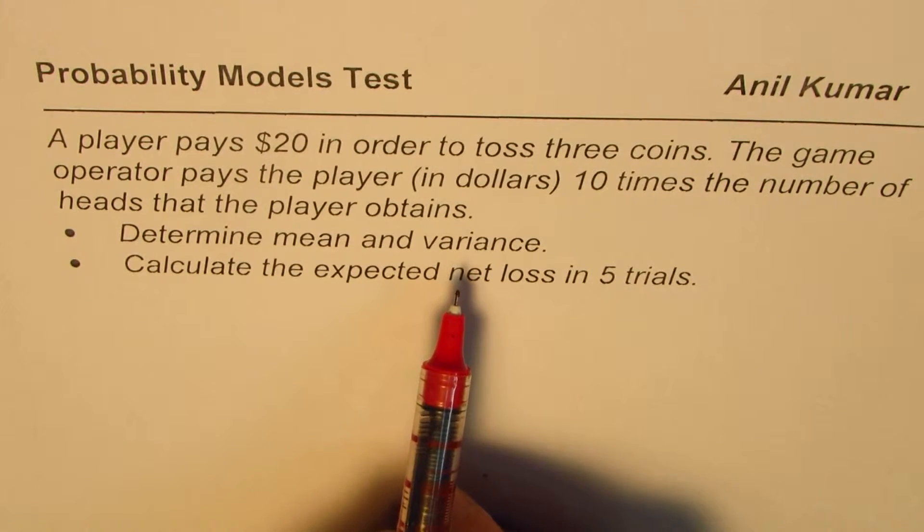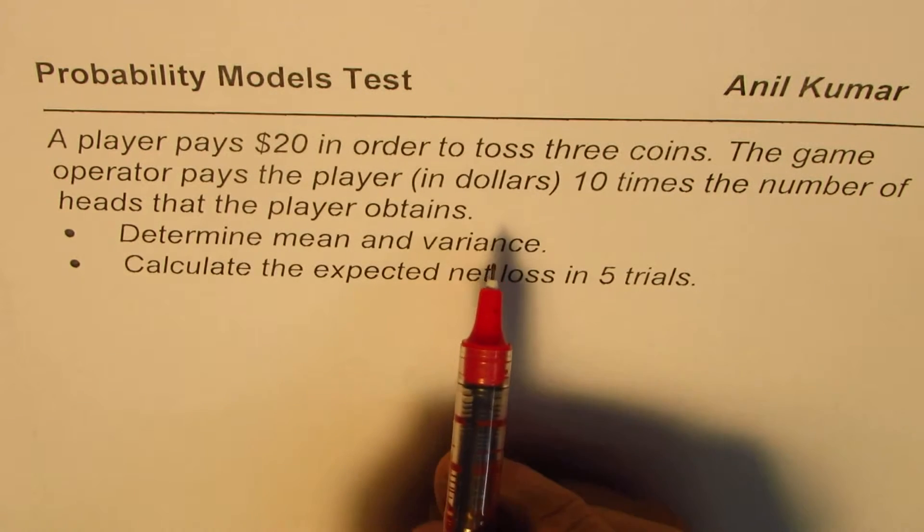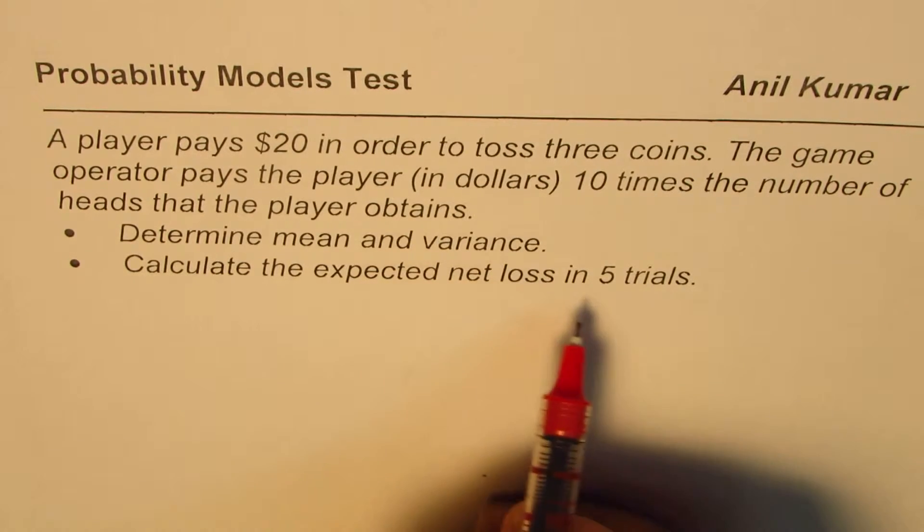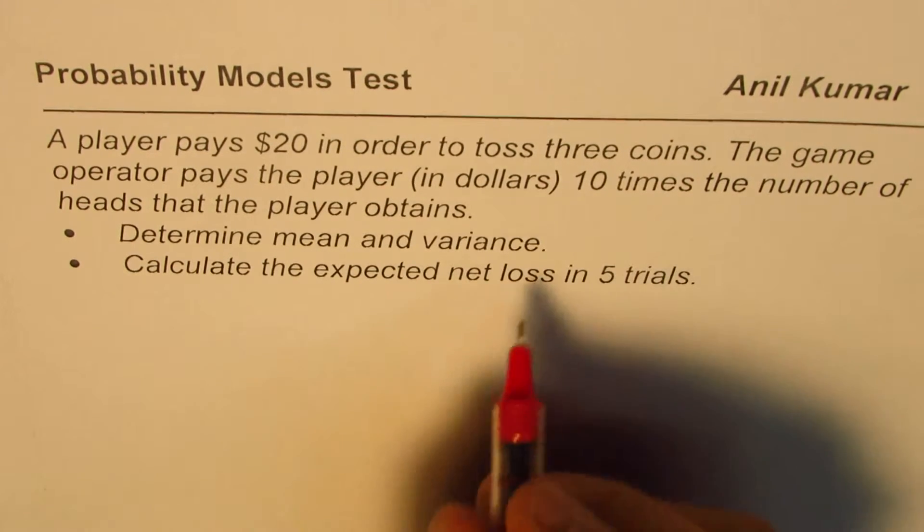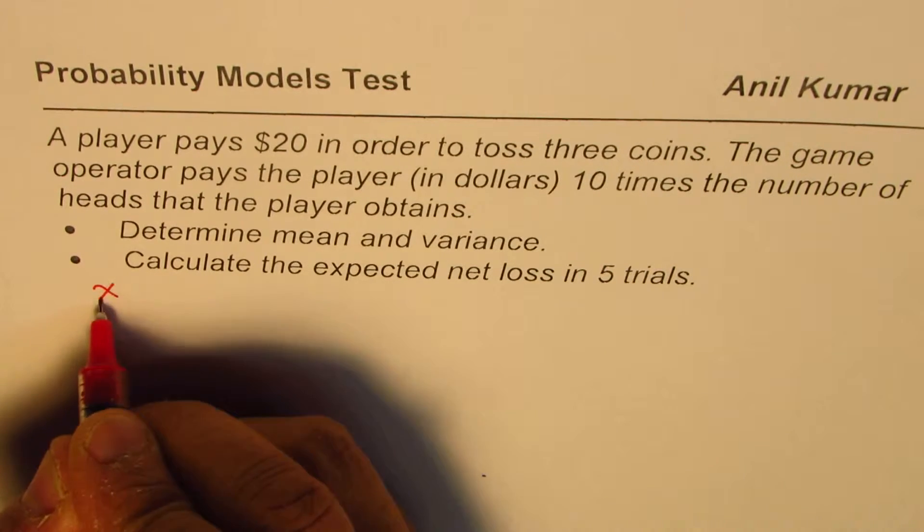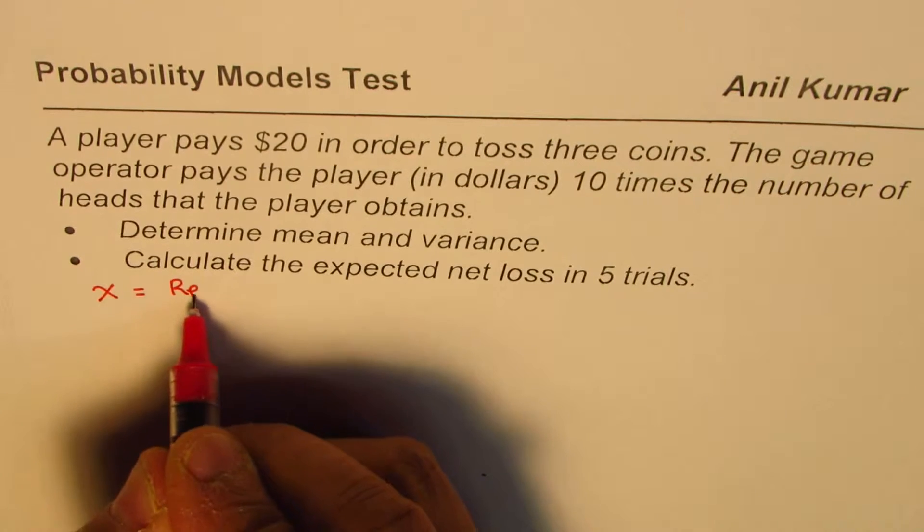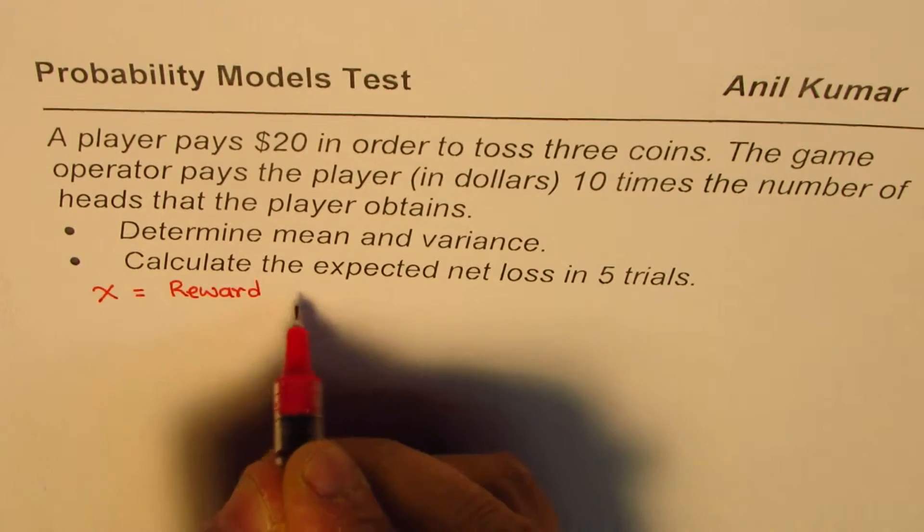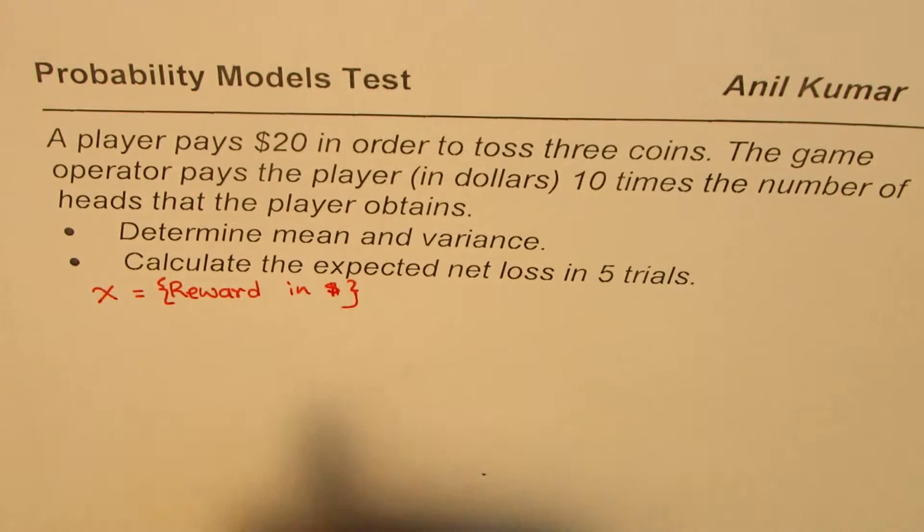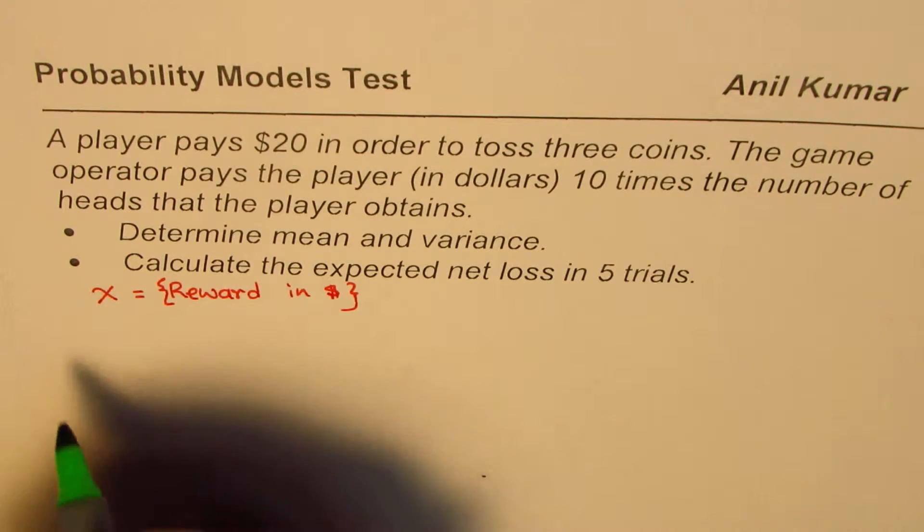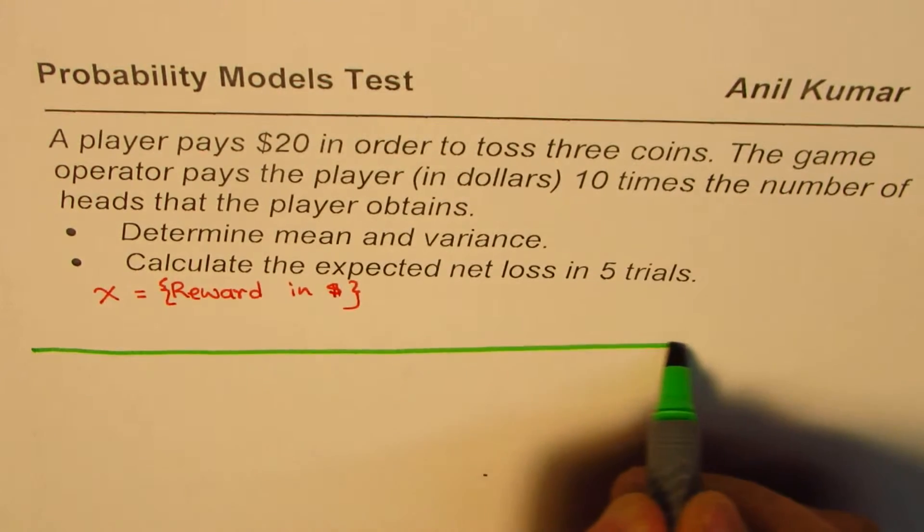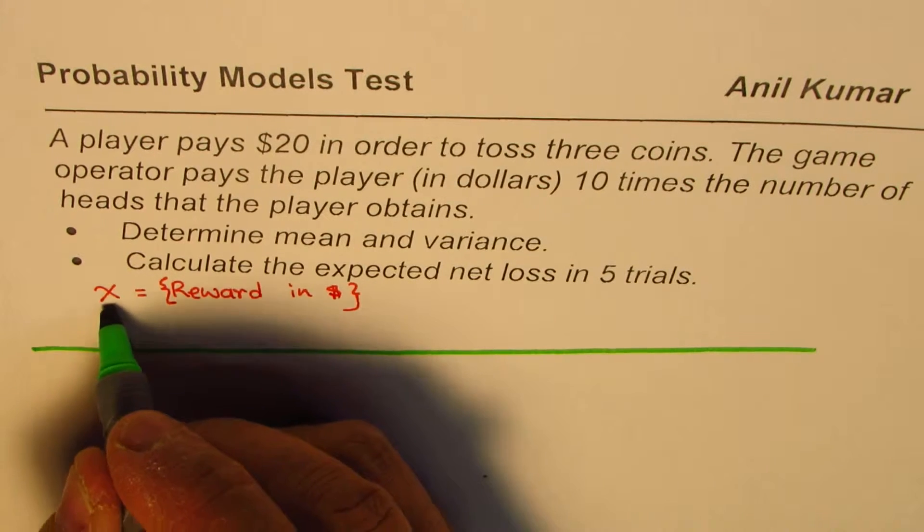So let us define our random variable and let the random variable be the reward since we have to find the loss. So we are saying that the random variable x equals the reward in dollars. So that is the random variable. So now we will make a table of values to calculate mean and variance. So let me just draw a line here and then we will see how it goes.